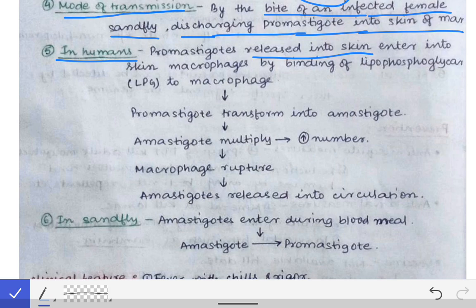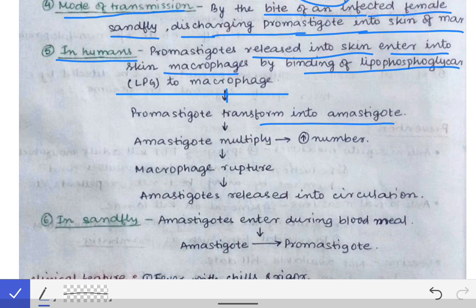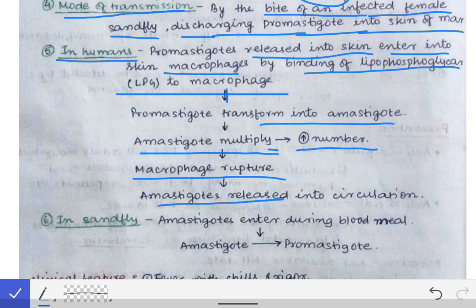The promastigote forms released into the skin enter skin macrophages by binding to lipophosphoglycan (LPG) receptors on the macrophages. After entry, the promastigote transforms into the amastigote form. The amastigotes multiply and increase in number, and eventually the macrophages get ruptured.